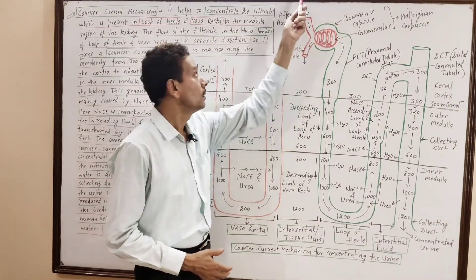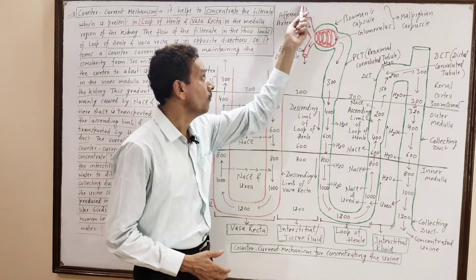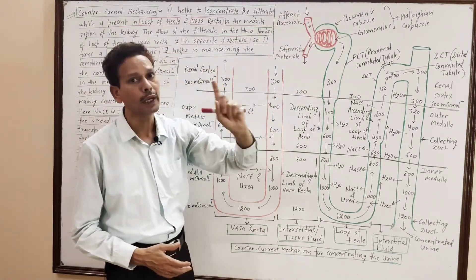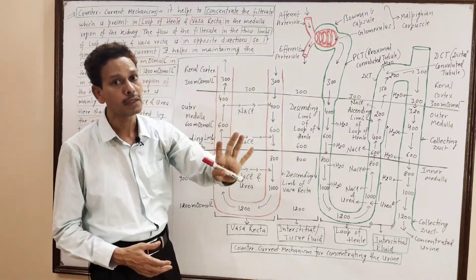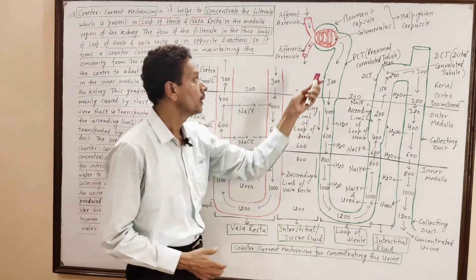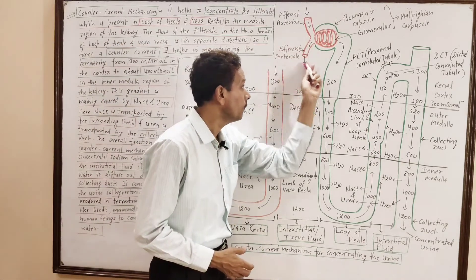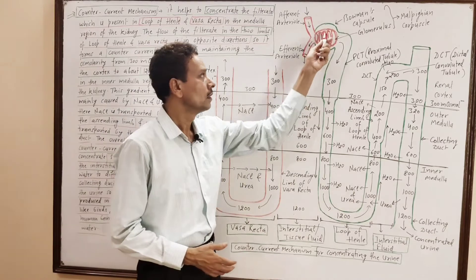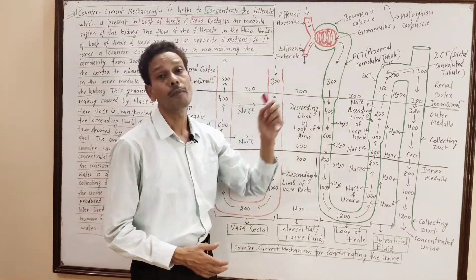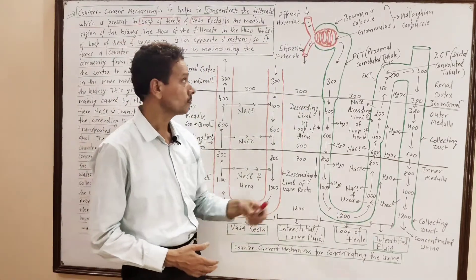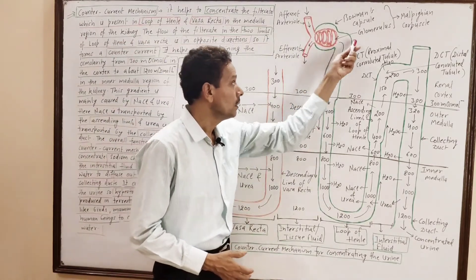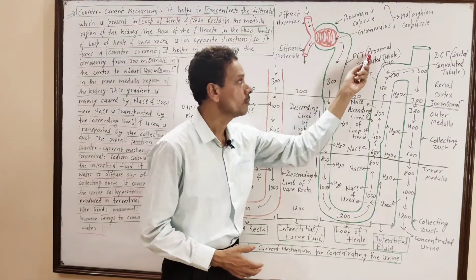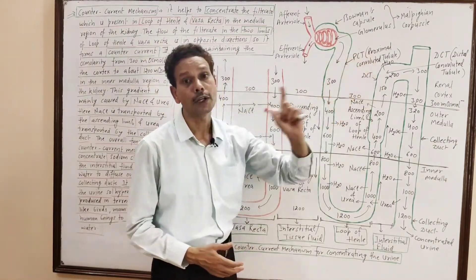In the Bowman's capsule, this afferent arteriole brings blood and the efferent arteriole drains the glomerulus. The next part is the PCT — the proximal convoluted tubule.